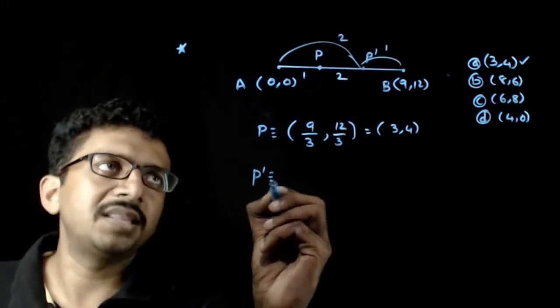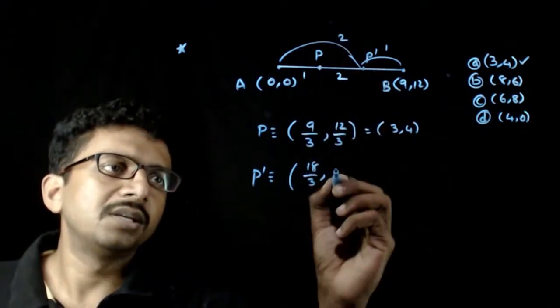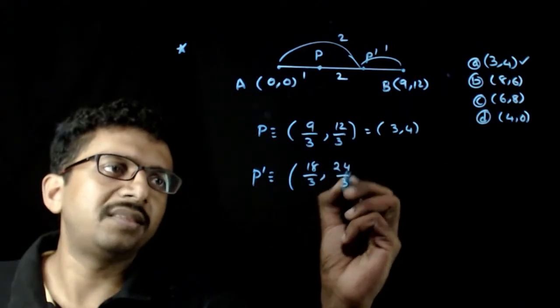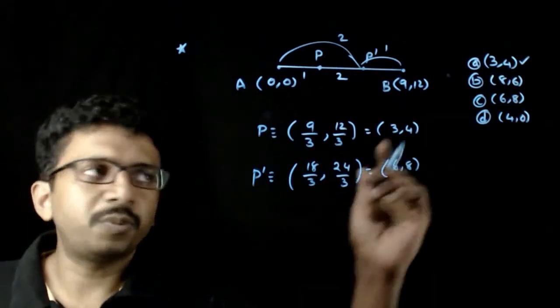P dash is 2 into 9 that is 18 by 3 comma 24 by 3 that is equal to 6 comma 8. This is the next point.